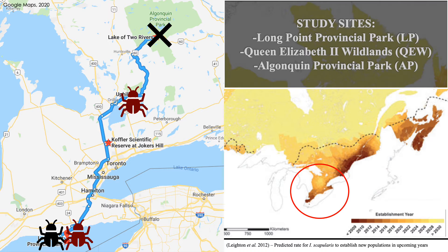Since deer mice are an important host to ticks in their early life stages, understanding how ticks are currently affecting mice can help us to make better predictions on how these ticks will affect inexperienced hosts that have not yet been exposed to deer ticks. Since there are some areas in Ontario that have both deer and wood ticks present, other areas that only have wood ticks present, and some areas that have neither species present, it is important to compare these populations now to better understand how the presence of these tick species may alter the potential host populations in the future.